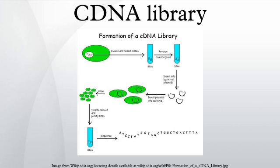The mRNA is eluted by using eluting buffer and some heat to separate the mRNA strands from oligo-dT. For cDNA construction, once mRNA is purified, oligo-dT is tagged as a complementary primer which binds to the poly-A tail providing a free 3'-OH end that can be extended by reverse transcriptase to create the complementary DNA strand.